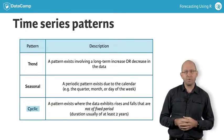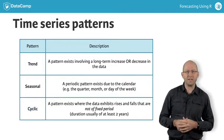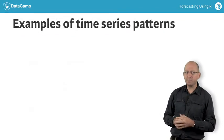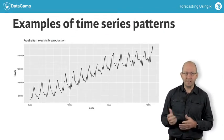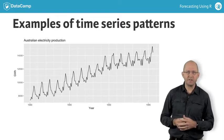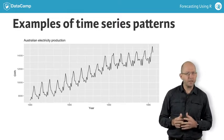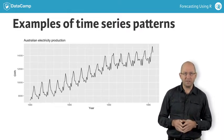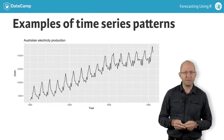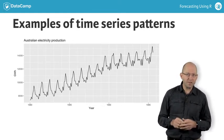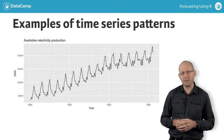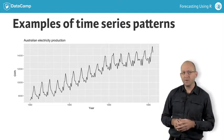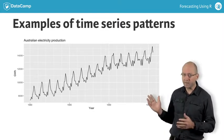It is probably easiest to see what I mean with some examples. This is monthly Australian electricity production. It is clearly trended, with a change in the slope of the trend around 1990. It is also seasonal. Notice how the seasonal pattern changes a little over time, with a little more volatility in the trough at the end of this period than at the beginning. There is no cyclic behaviour visible in this graph.